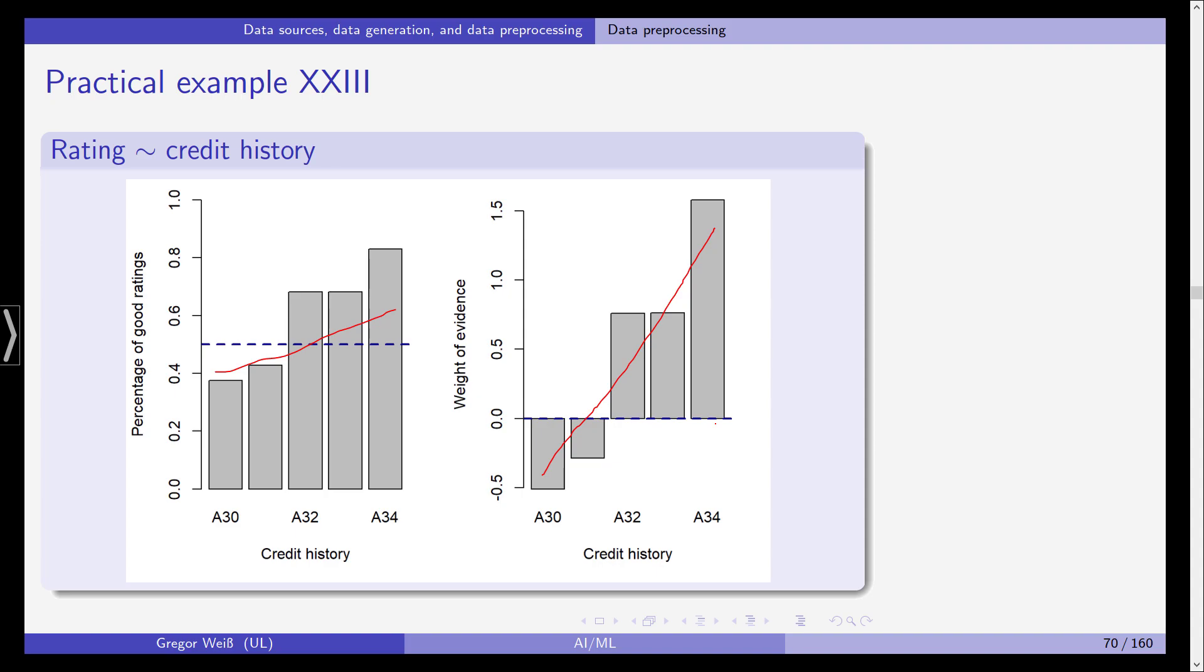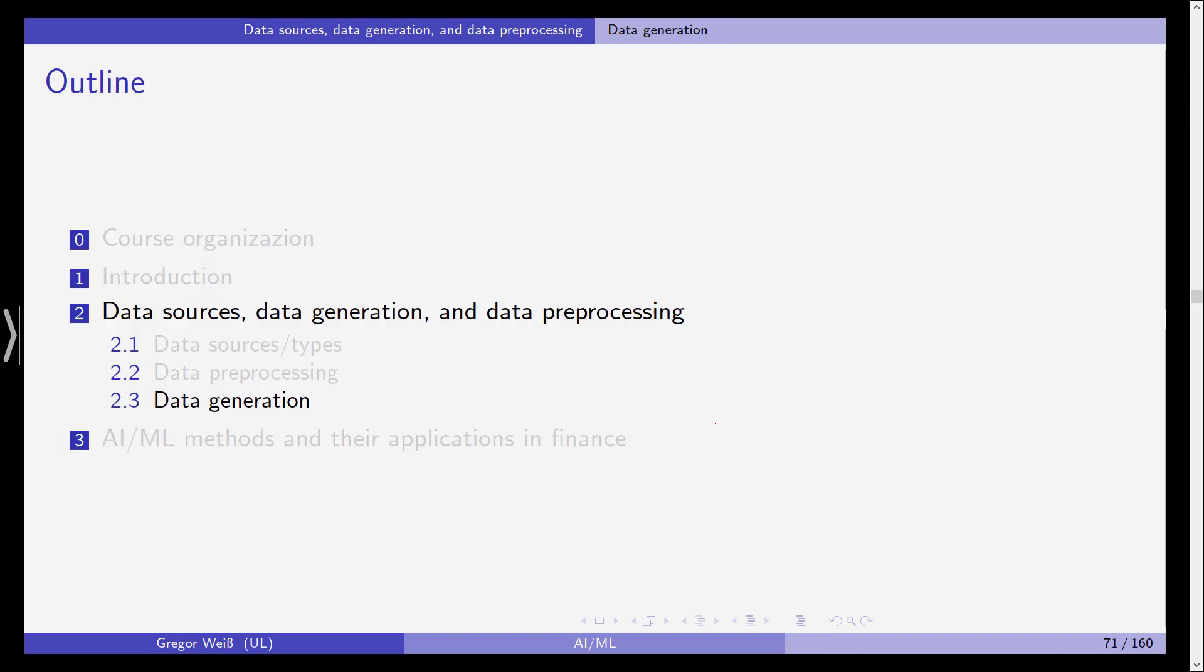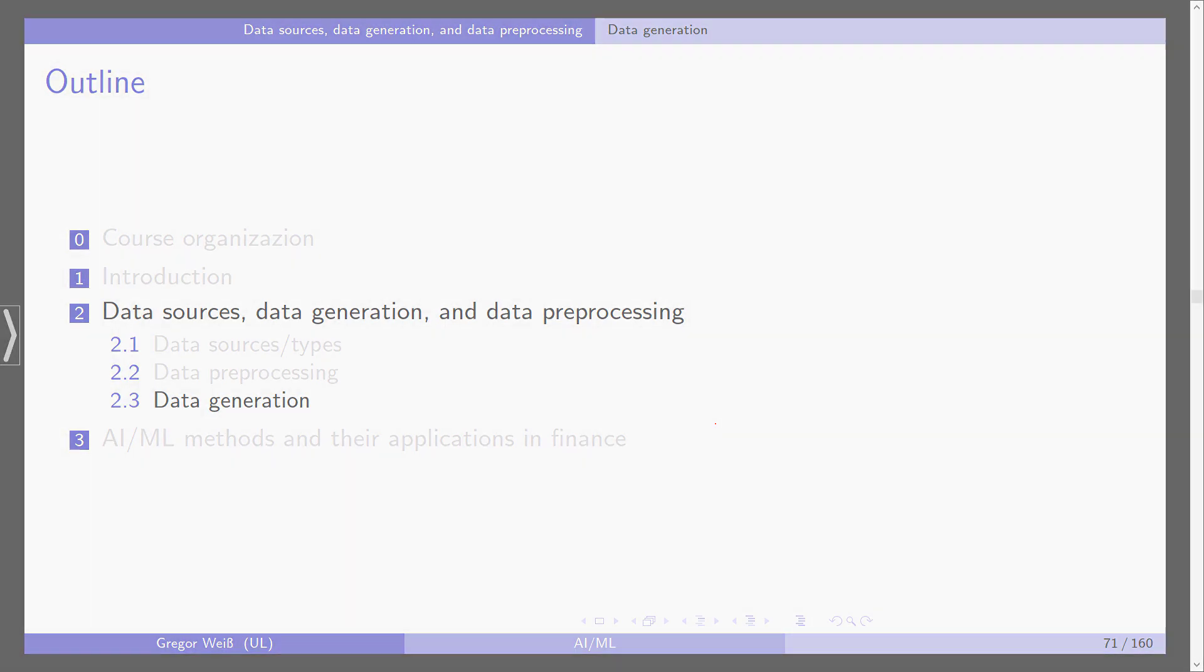So this is the weight of evidence ratio that can be used to study the explanatory power of some of our covariates in order to see which variables should be included in later models. So this is data pre-processing and in the next video we'll talk about data generation.